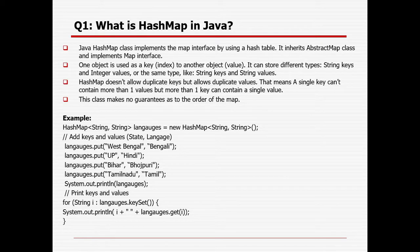What is HashMap in Java? Java HashMap class implements the map interface by using a hash table. It inherits the abstract map class and implements the map interface. One object is used as key and another is used as value. It can store different types — string keys with integer values, or same types like string key and string values.